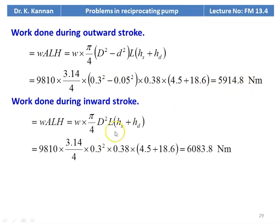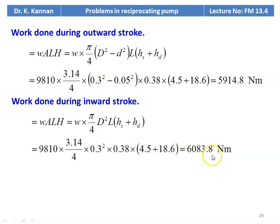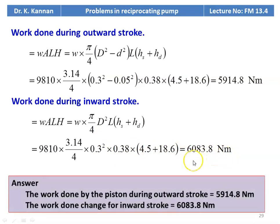Work done during the inward stroke: W × (π/4 × D²) × L × (Hs + Hd). During the inward stroke, the area is only the full piston area without subtracting the rod. Substituting: 9810 × (3.14/4) × 0.3² × 0.38 × (4.5 + 18.6) = 6083.8 Newton meter. So work done during the outward stroke is 5914.8 N·m and for the inward stroke is 6083.8 N·m.